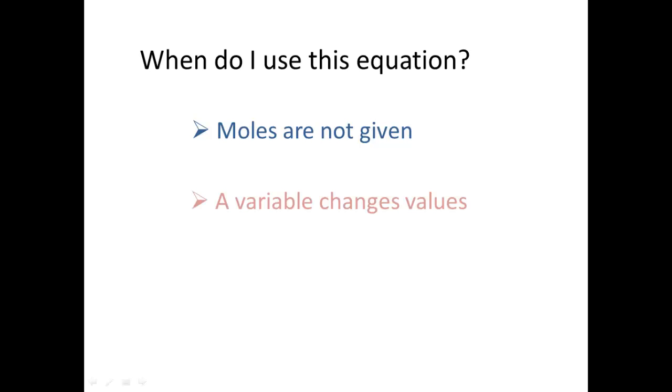Second, if you have a variable that changes values, you know that you're going to be using the combined gas law. So, if you have a temperature that changes values or pressure or volume. If you're given two different values for that variable, you know you're going to be using the combined gas law.